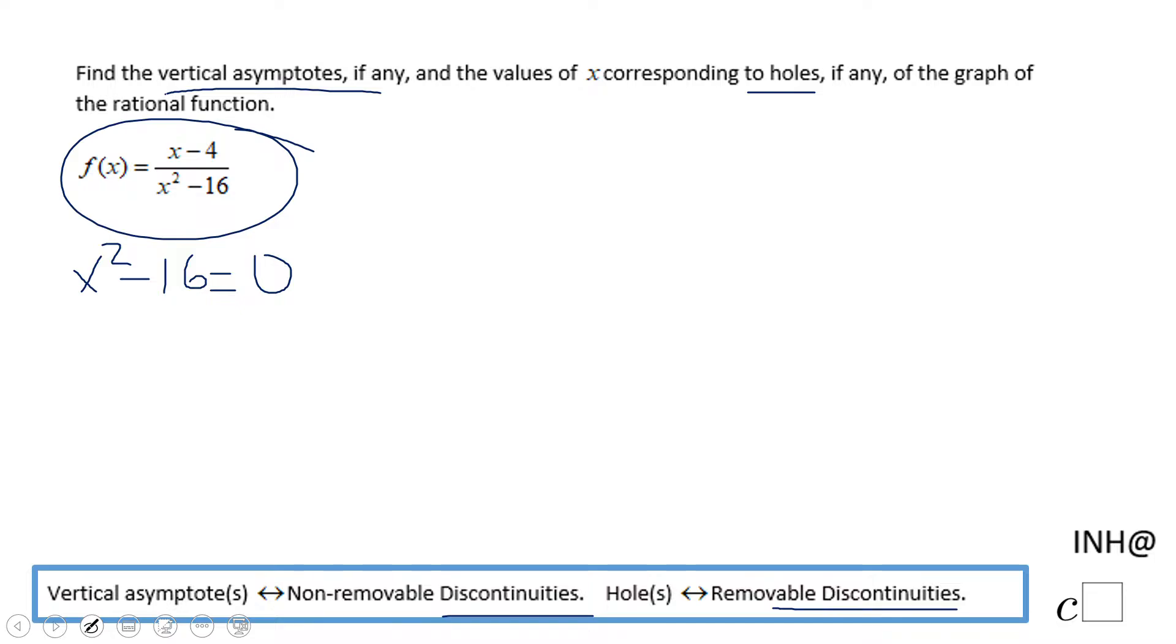In this case we're going to need to factor out the denominator, so that will be x minus 4, this is the difference of squares, x plus 4 equals zero.